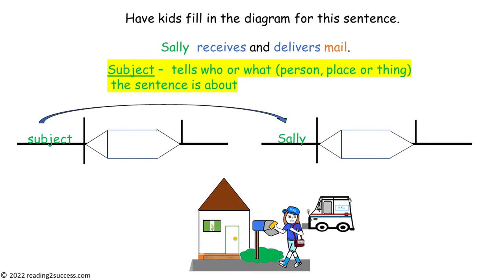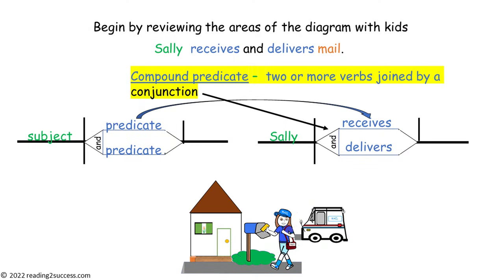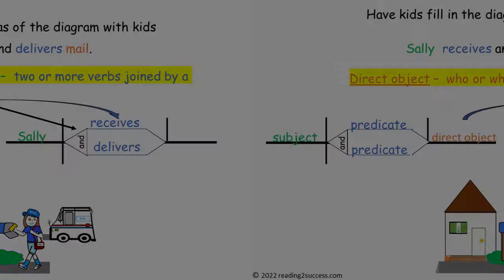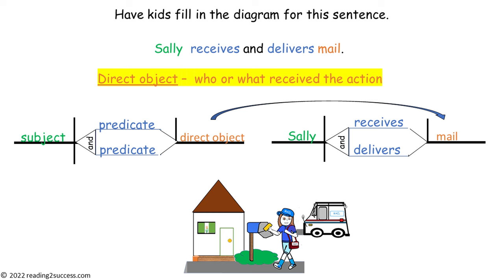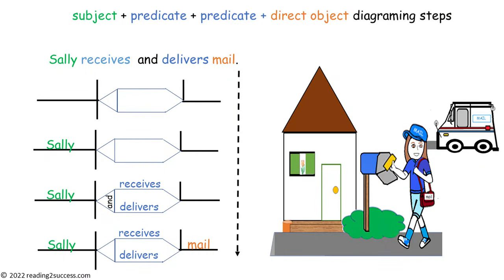Now have kids fill in the diagram for this sentence. The subject is Sally. Next is the compound predicate: receives and delivers. And the direct object is mail. Here is a sequence of steps we just finished.